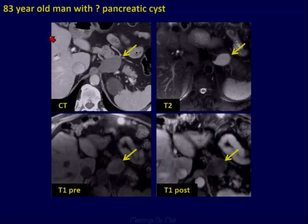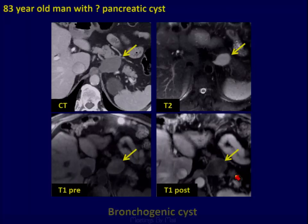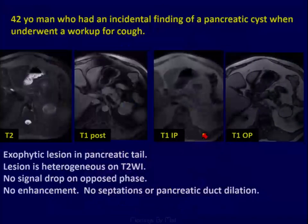This is an 83-year-old male with a question of pancreatic cyst by CT: T2 bright, no enhancement, no septations, no mural nodules, no dilation of the pancreatic duct. This was sent for surgery, and this was a bronchogenic cyst. It doesn't matter how good you are, you're going to encounter some of these lesions.